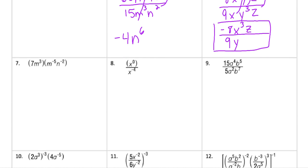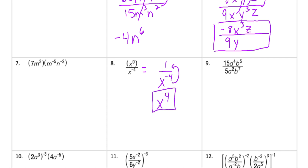For number eight, we have a zero exponent, and anything to the zero power is one — so we simplify that part to one. Then to get rid of the remaining negative exponent, we flip it to the numerator and make it positive, giving just x^4.